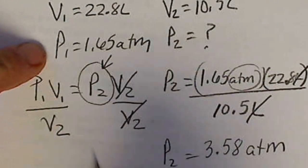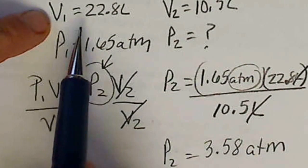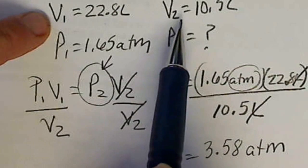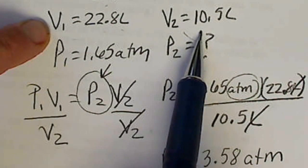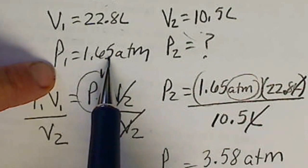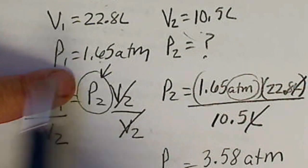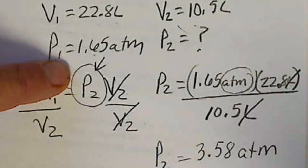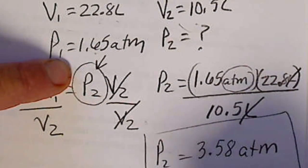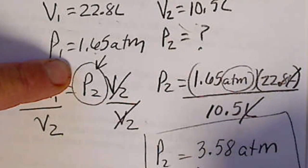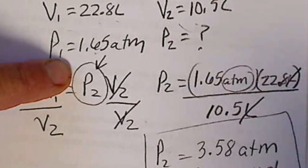And we can do a quick check to see if this answer makes sense. If we look at what happened to our volume, the volume decreased from 22.8 down to 10.5 liters. So our new pressure had better be higher than 1.65 atmospheres. So this obeys Boyle's law. Our pressure increased, which it should. It's fine.